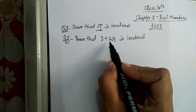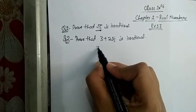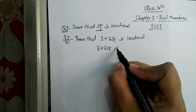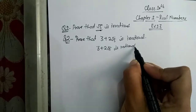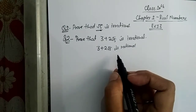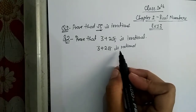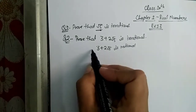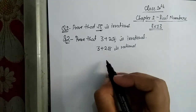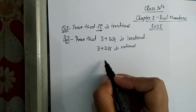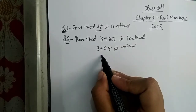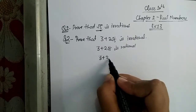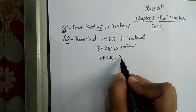How we can do this question? Firstly, we will assume that 3 + 2√5 is rational. We do this type of question by an assumption. So let's assume 3 + 2√5 is rational. Then therefore we can find two integers a and b, where b is not equal to 0, such that 3 + 2√5 = a/b.